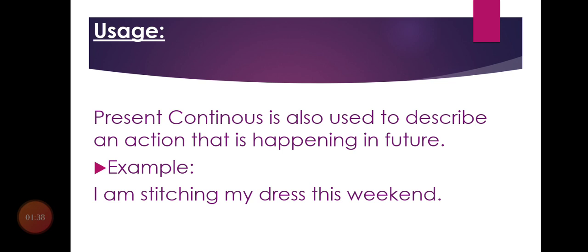Present continuous is also used to describe an action that is happening in the future. You might wonder why we use present continuous for the future — we will discuss future continuous later. For now, present continuous can describe a planned future action. For example, 'I am stitching my dress this weekend' means I have planned it. Adding 'this weekend' at the end signals a confirmed plan.